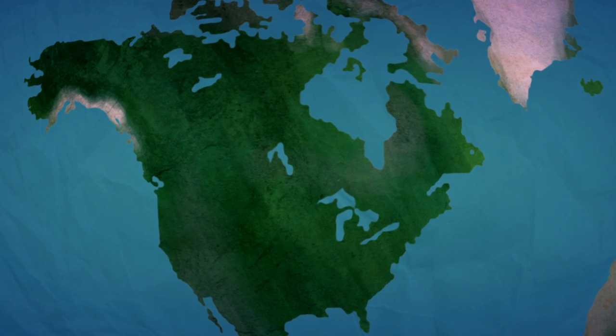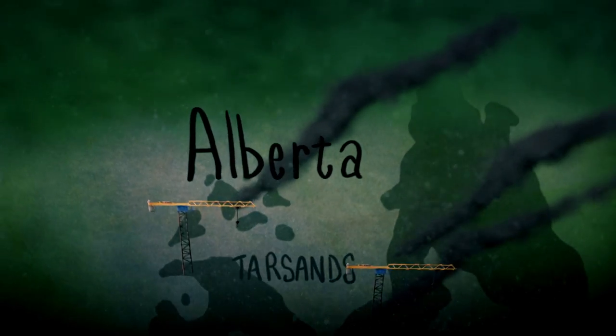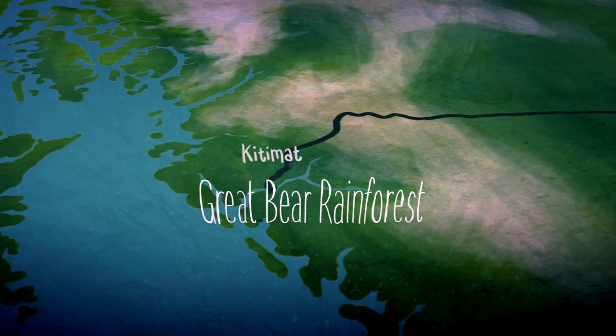But a new threat is preparing to snake its way through the Great Bear Rainforest. A proposal to use the world's largest supertankers to ship oil ripped from the Alberta tar sands to the hungry energy markets overseas.